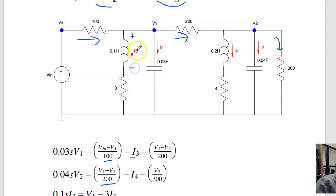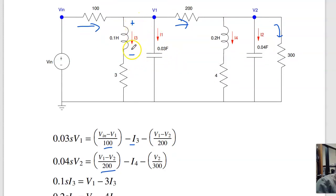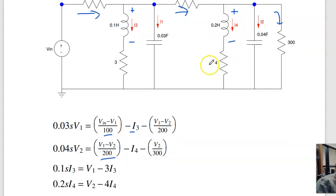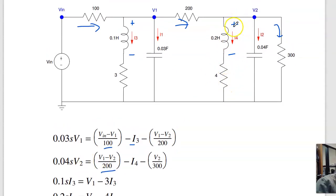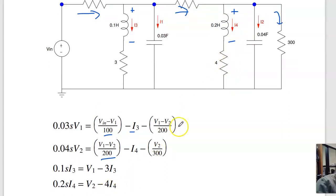For inductor 3, the voltage is L dI/dt, so that's 0.1 times I3. The voltage on the top is V1. The voltage on the bottom is I times R, which is 3I3. And the fourth inductor, this voltage, is L dI/dt. On the top it's V2, on the bottom it's I times R, which is 4I4. So there's your four coupled first-order differential equations that describe the circuit.